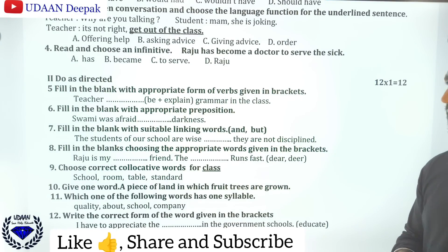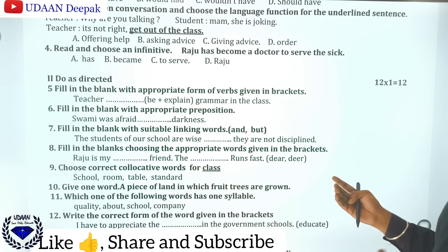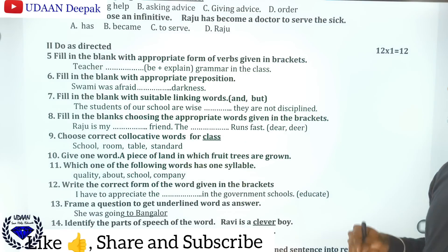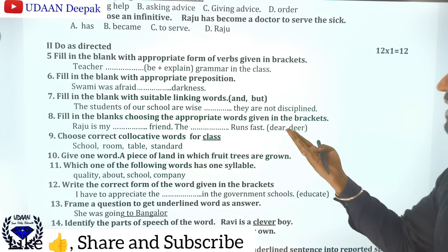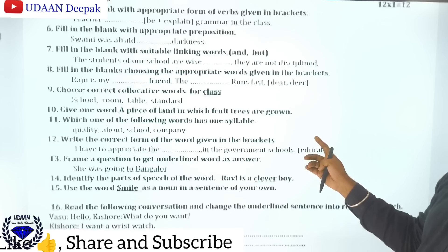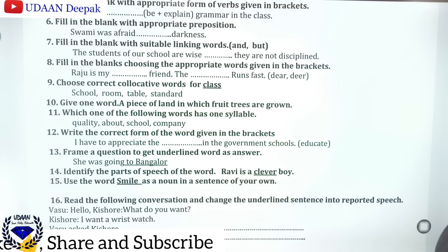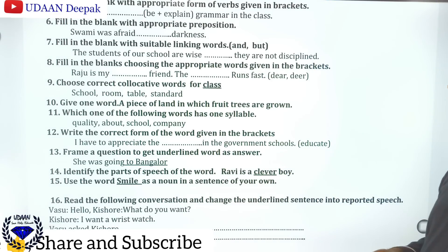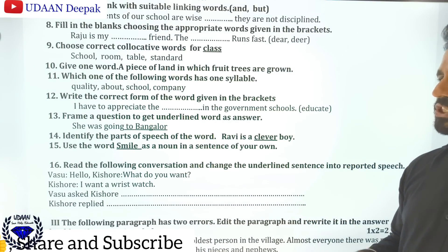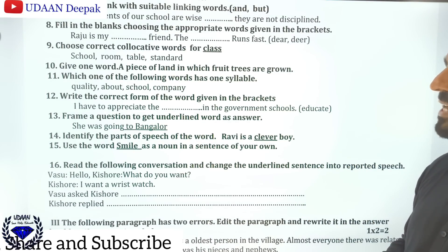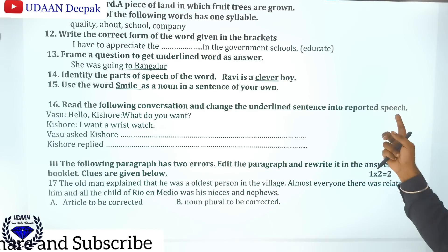Then you will have 12 questions of one mark each, all from the grammar section. These include: fill in the blanks with appropriate verb, then preposition, suitable linking words, fill in the blanks, choose the collective word, give one word substitution, identify a one-syllable word, write the correct form of the word, frame a question, identify the part of speech, use the word 'smile' as a noun in your own sentence, and one reported speech.